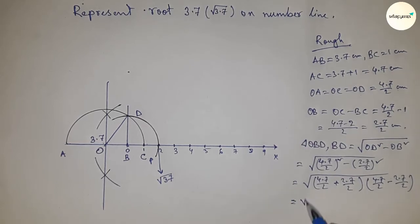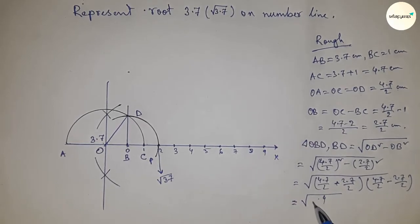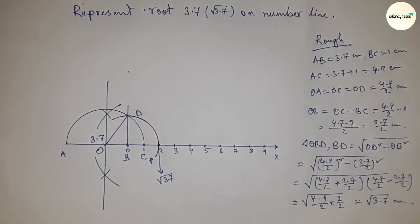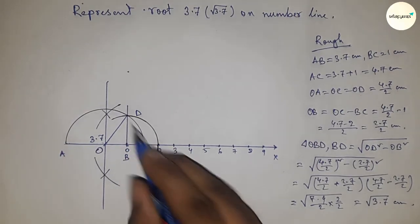So from this, so this is 7.4 by 2 into 2 by 2, so this is root 3.7 centimeter. Therefore, distance BD and BP are equal, so this is root 3.7 centimeter.